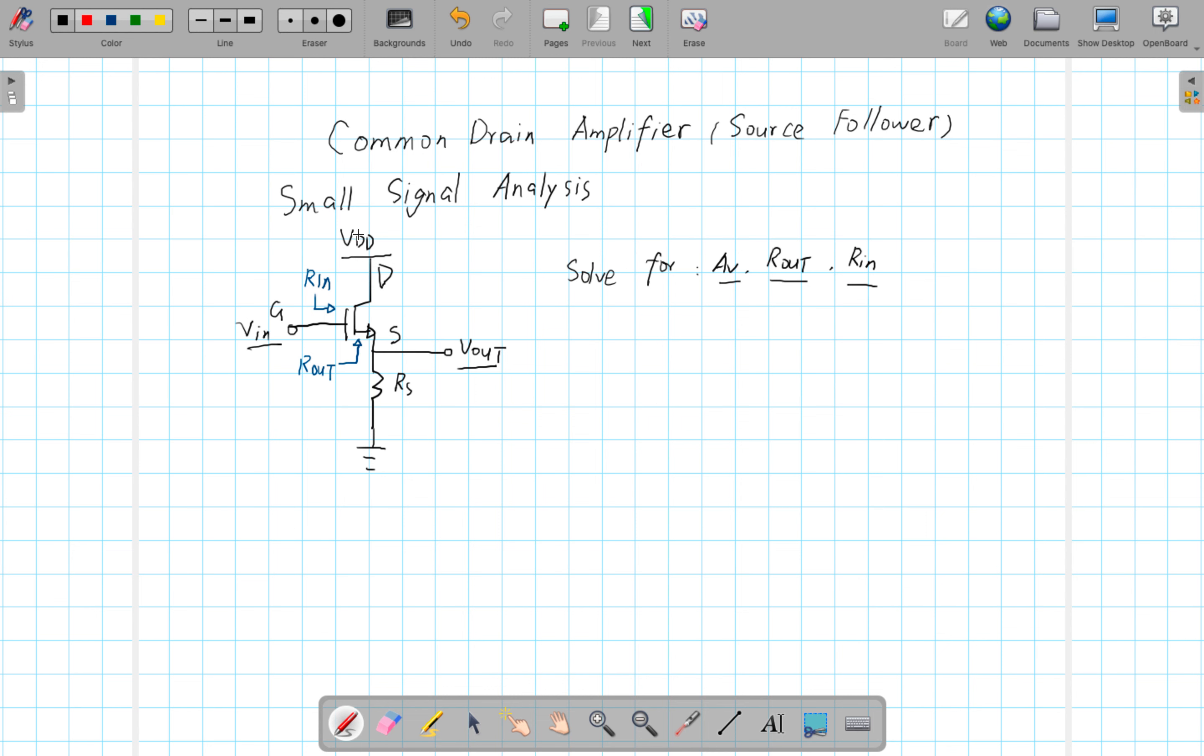So the first step to solve for a small signal voltage gain is always draw a small signal model of the circuit. This is the source, there is a R sub S resistor connected.